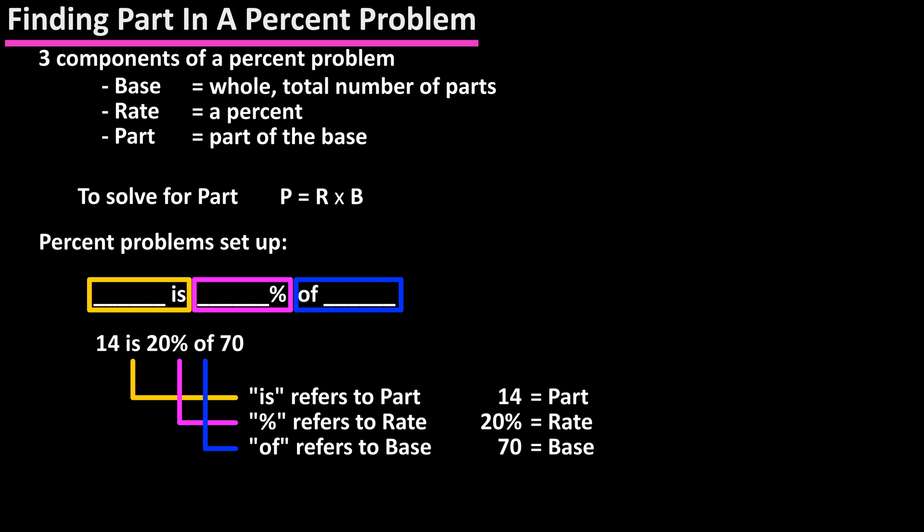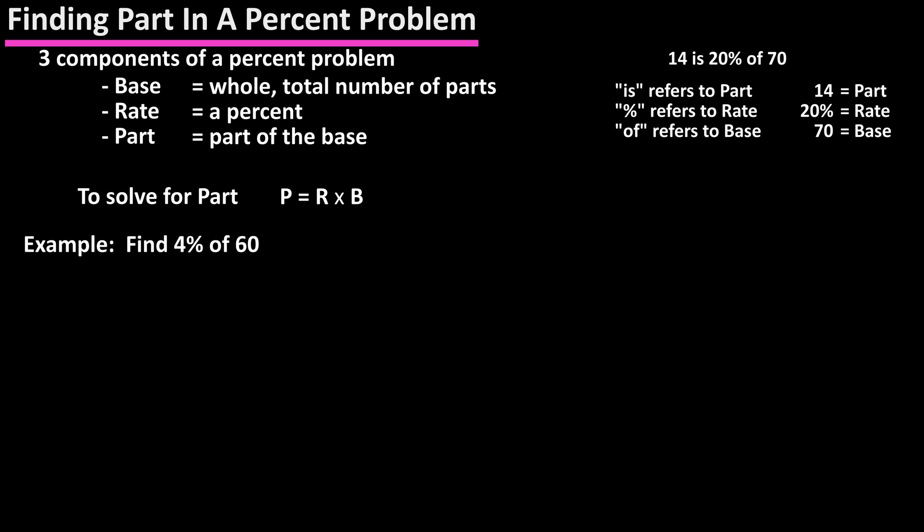Here's an example: Find 4% of 60. "4%" with the percent sign is the rate, and "of 60" means the base. Since we know the rate and base, we're looking to find the part. Part equals rate times base, so part equals 4% times 60.